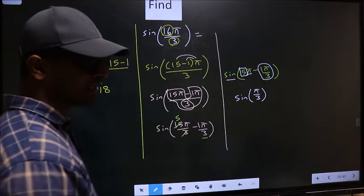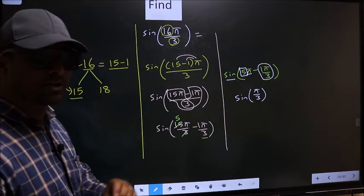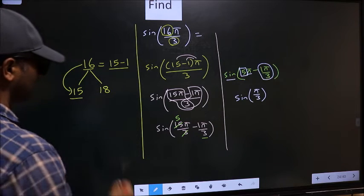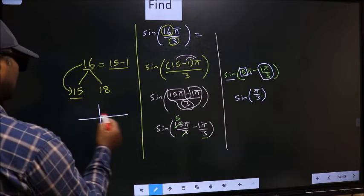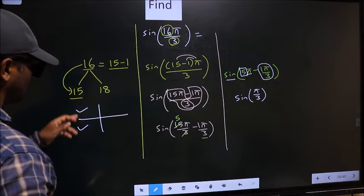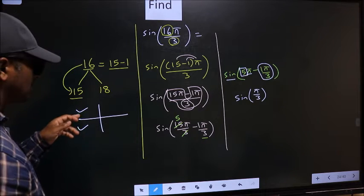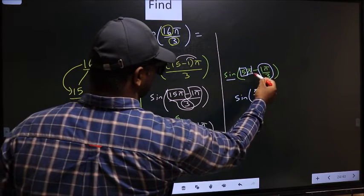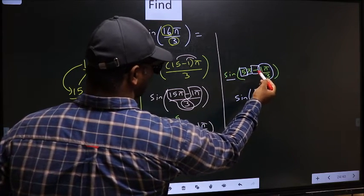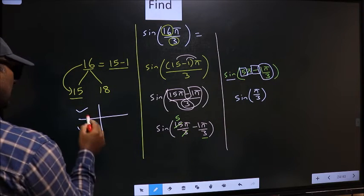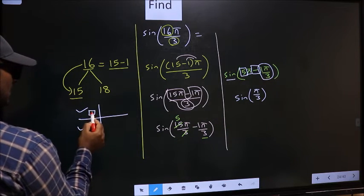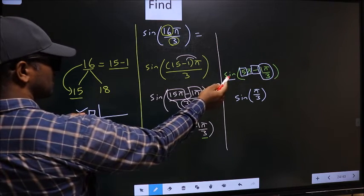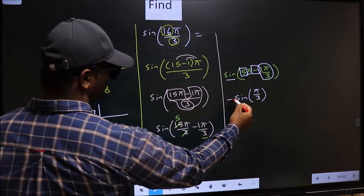5 is odd. For every odd multiple of π, the angle will lie either in the second or in the third. To decide in which quadrant does the angle lie, you should look at this symbol. Here we have negative, that means angle lies in the second quadrant. And in the second quadrant, sin is positive, so you put plus.